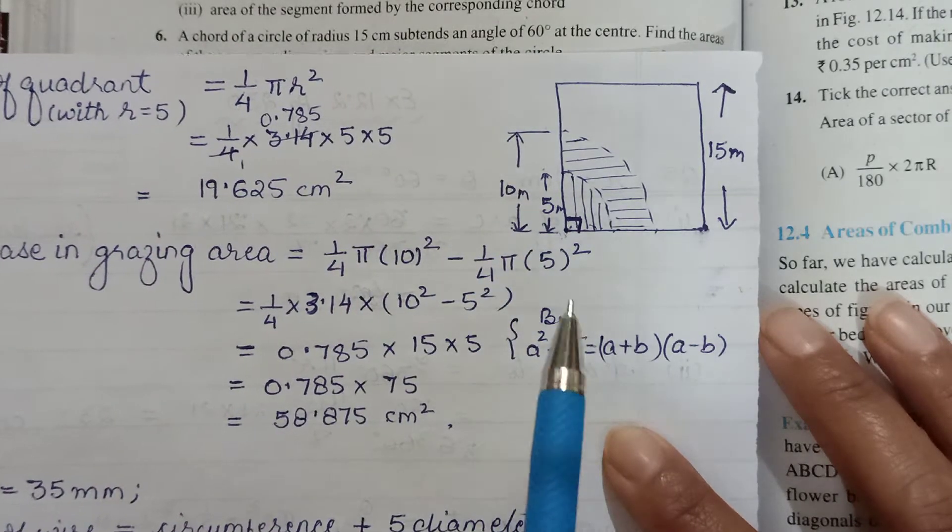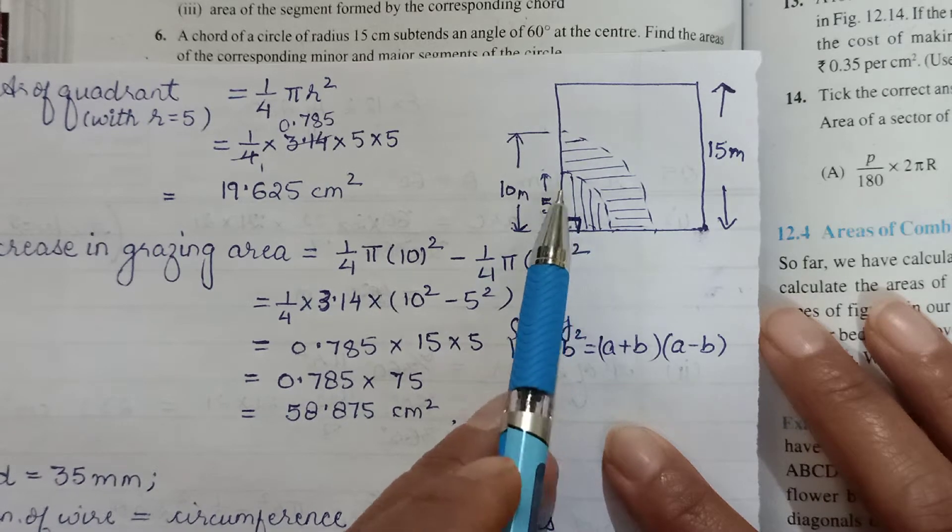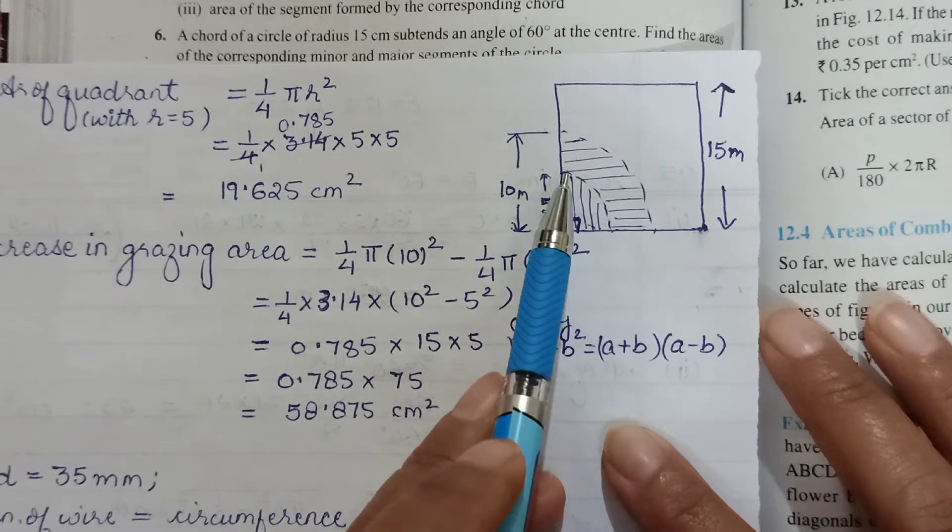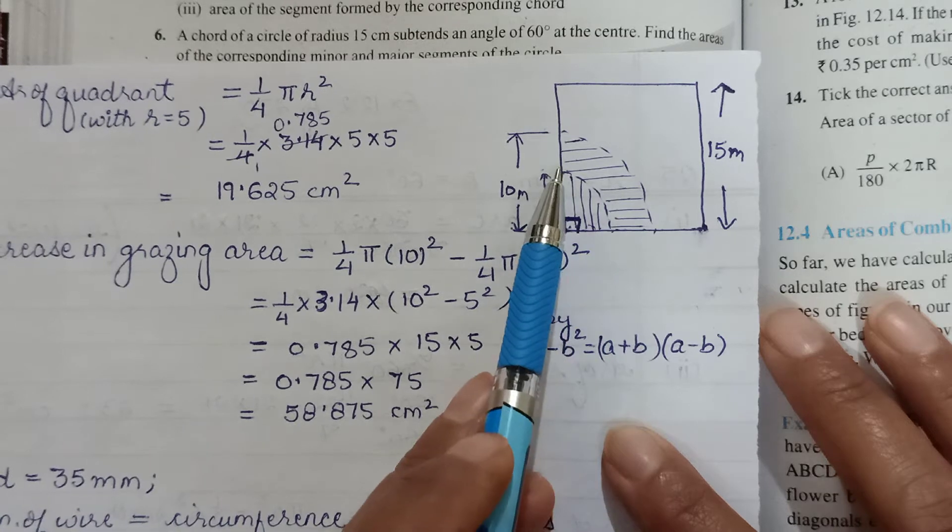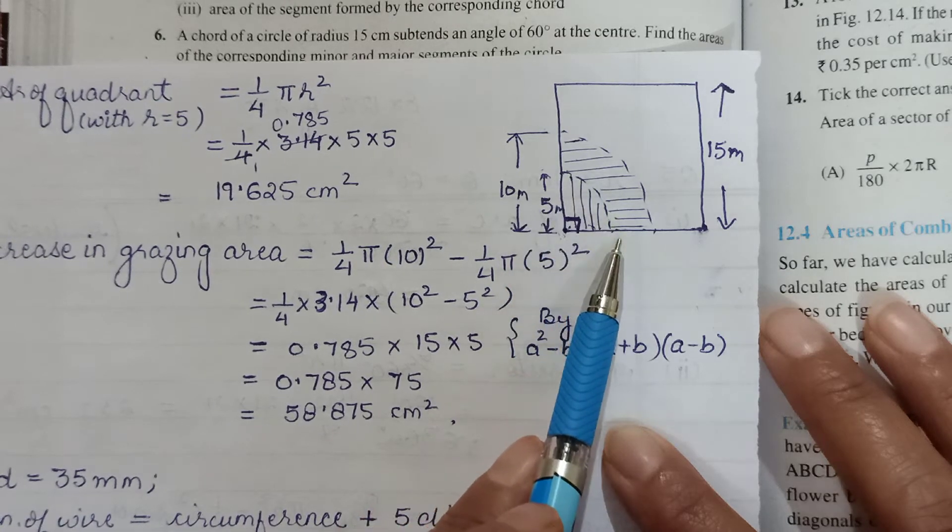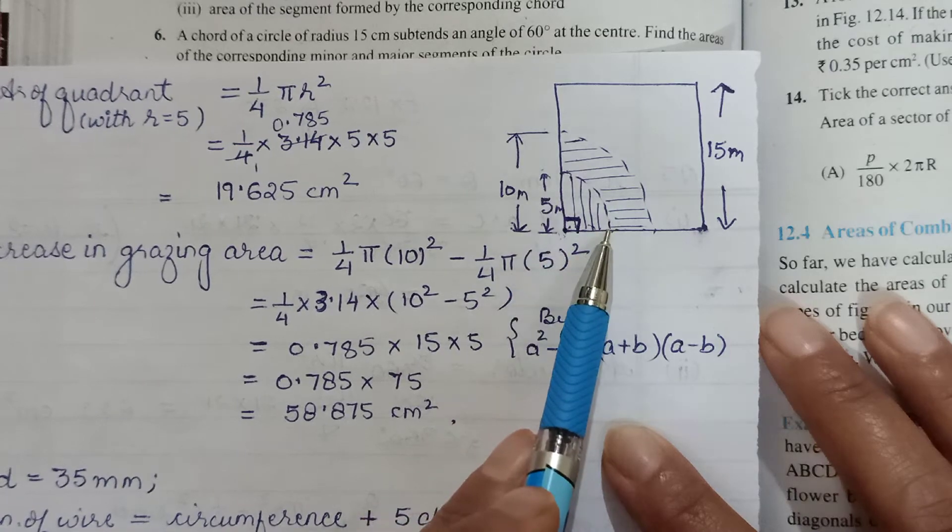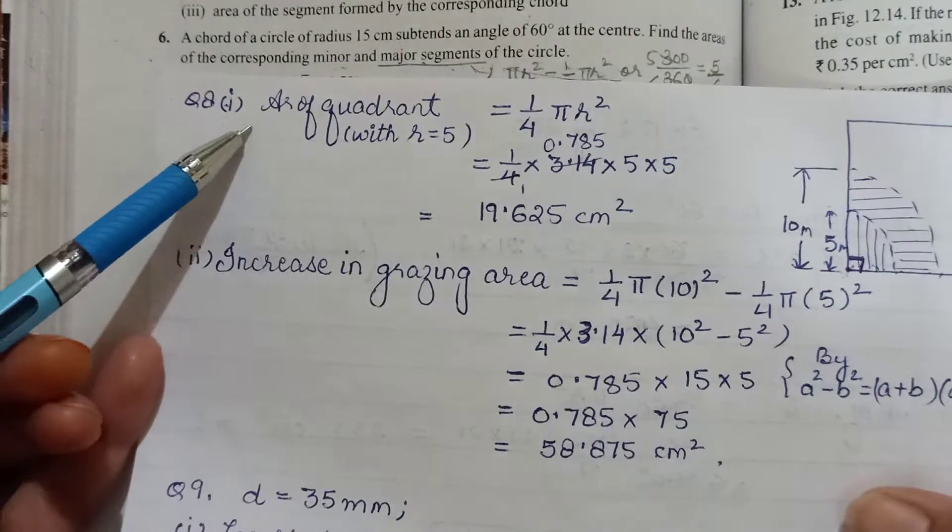When the horse is tied with this 5 meter rope, the horse will be able to move in this circular movement. The maximum area it can roam around is this quadrant - 90 degree angle hai, to this quadrant cover kar paega.